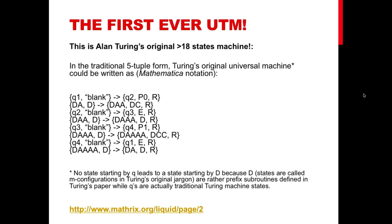It is a tricky machine because some of these labels are not traditional Turing machine states but subroutines that Turing defined in his paper. The E for example stands for erasing. If you want to know more about it, you can go to my blog at this URL below and it is very interesting.